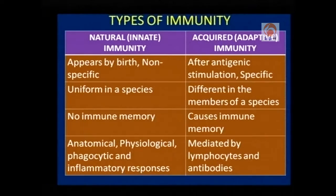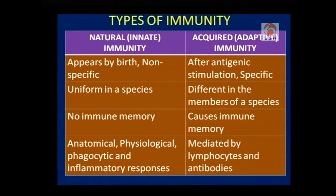All members of a species show uniform resistance to a particular set of infections, and as such natural immunity does not generate immune memory. A number of anatomical, physiological, phagocytic, and inflammatory responses are involved in providing natural immunity. On the other hand, acquired immunity is activated after antigenic stimulation. It is specific — one antibody is produced against one particular antigen. That is why our immune system is able to fight against thousands of antigens and viruses to which we are exposed in our lifetime.